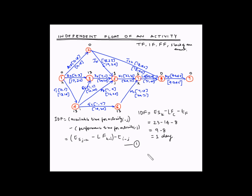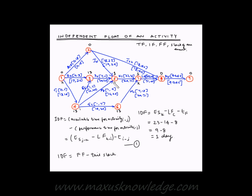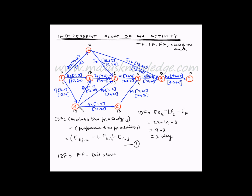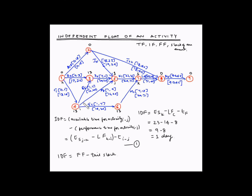There is another way of calculating the independent float: IDF equals free float minus tail slack. Tail slack is the slack of the event which is towards the tail of the arrow, as opposed to head slack which is the slack of the event touching the head of the arrow. In this case, the slack for event 4 is considered as the tail slack for activity F, but it is the head slack for activity C.